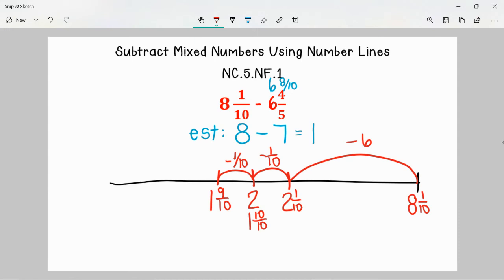So I have subtracted 2 tenths out of the 8 tenths I need to subtract. Now that I am looking at 1 and 9 tenths it would be pretty easy to go ahead and just subtract the rest of the tenths. I know that is 6 more tenths that I need to subtract. And I know that 9 tenths minus 6 tenths would be 3 tenths. So I would end up at 1 and 3 tenths. So this lets me know that the difference between 8 and 1 tenth and 6 and 4 fifths is 1 and 3 tenths. We had estimated that our answer would be around 1 but a little bit more and that is true of 1 and 3 tenths. So we know that answer is very reasonable.